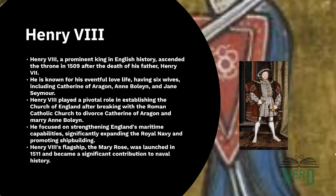Henry VIII had six wives in total: Catherine of Aragon, Anne Boleyn, Jane Seymour, Anne of Cleves, Catherine Howard, and Catherine Parr. His desire to divorce Catherine of Aragon and marry Anne Boleyn led him to break with the Roman Catholic Church and create the Church of England.